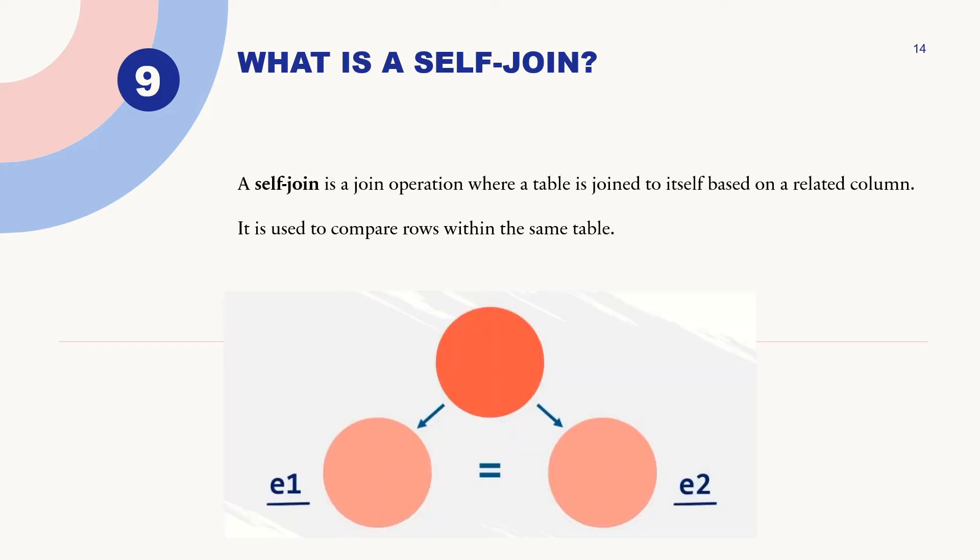What is a self-join? A self-join is a join operation where a table is joined to itself based on a related column. It is used to compare rows within the same table.